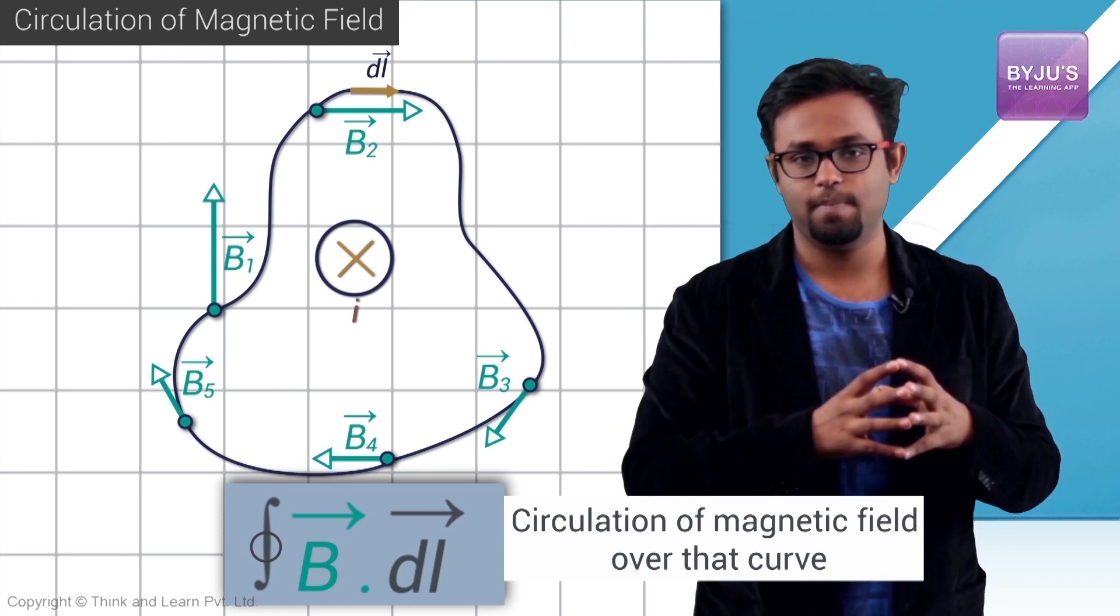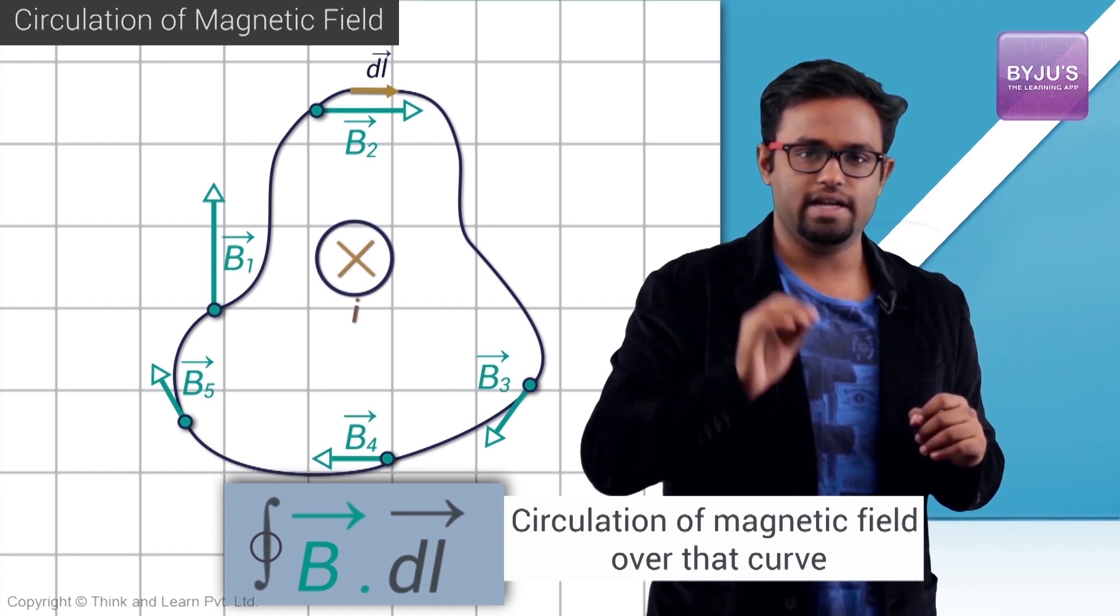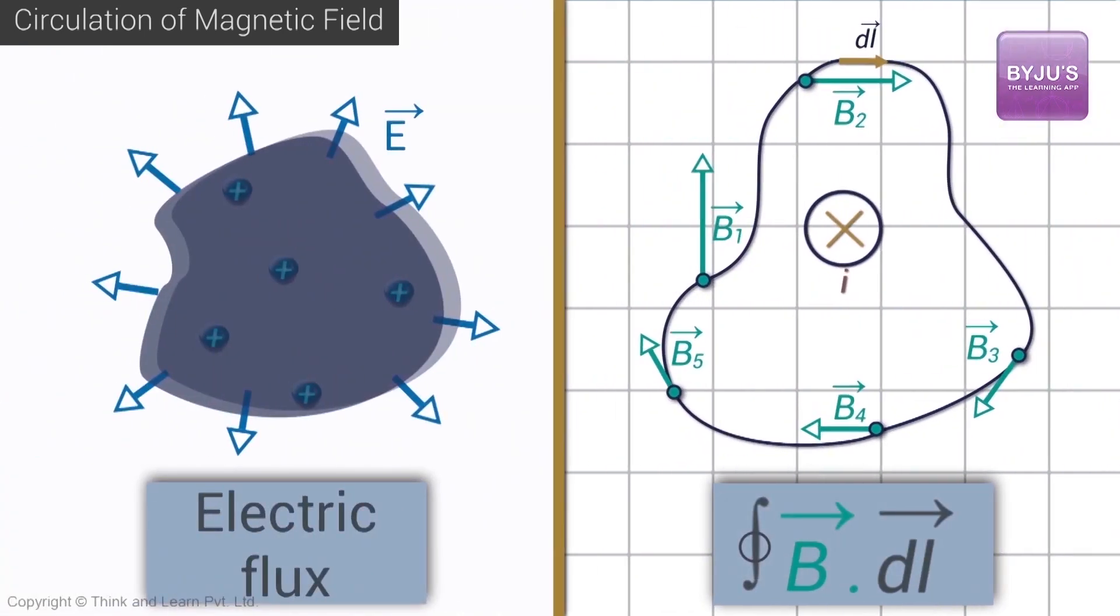Remember, in electrostatics we had an idea called the flux of the electric field. The flux of electric field was defined over a surface. Fluxes are defined for surfaces and circulation is defined for loops. Just as in the case of electric flux where we just chose some surface, it was an imaginary surface and we had a field, the electric field, it was a vector field, and we defined the electric flux as E dot dA and the integral of that over that surface.